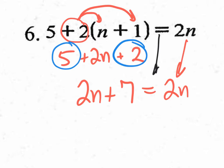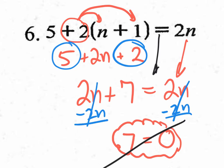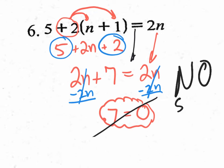This is now a simplified equation. We've already distributed and combined like terms. Now let's get n by itself. Let's get rid of this 2n — what you do to one side you must do to the other — and it cancels. What we have left is a 7 on the left side and nothing on the right side, which is 0. We know that 7 cannot equal 0, so when you end up with something impossible like that, we say 'no solution.' If you had ended up with something always true like 7 equals 7, you would say 'all real numbers.'